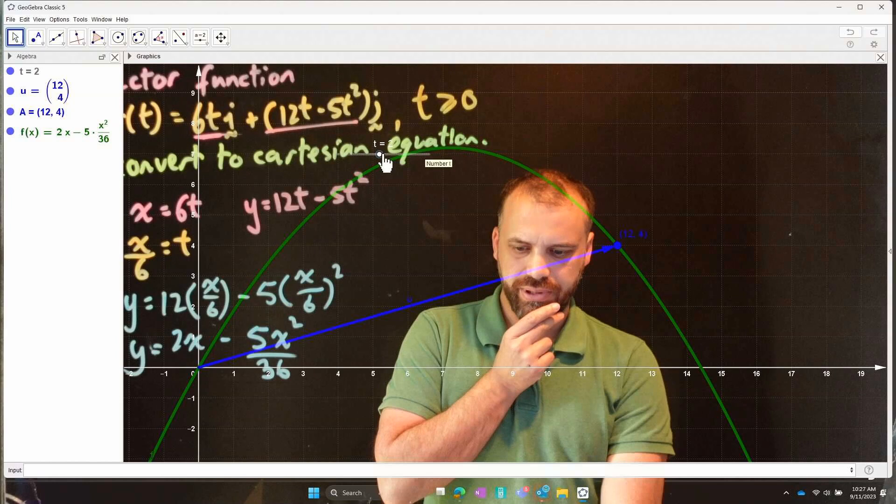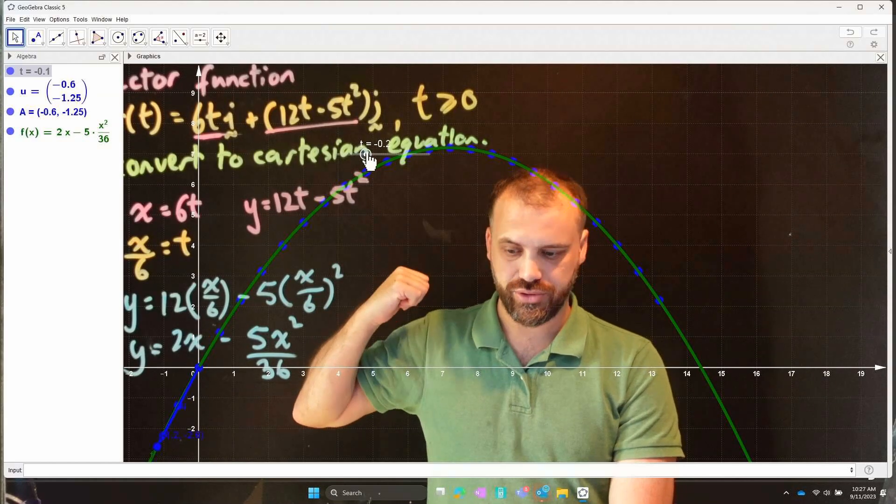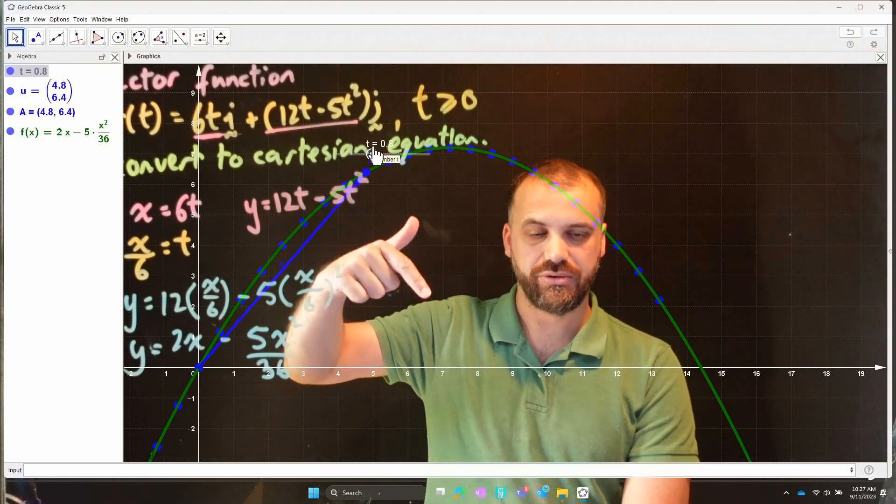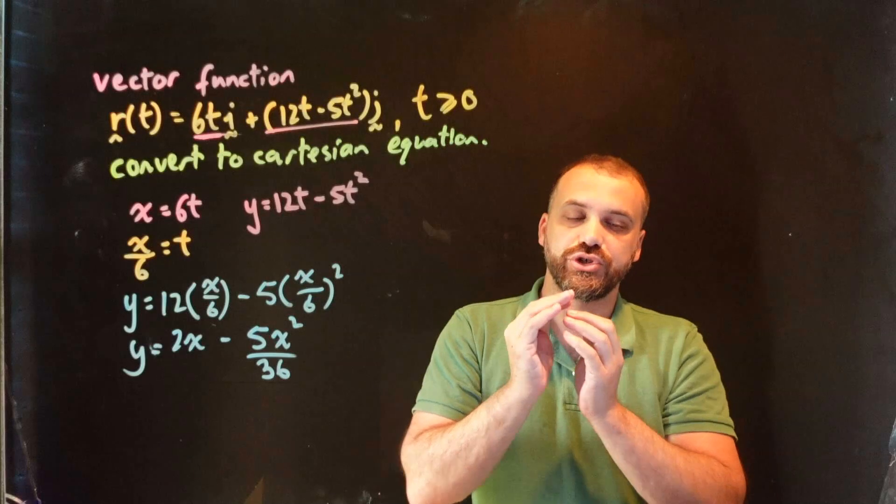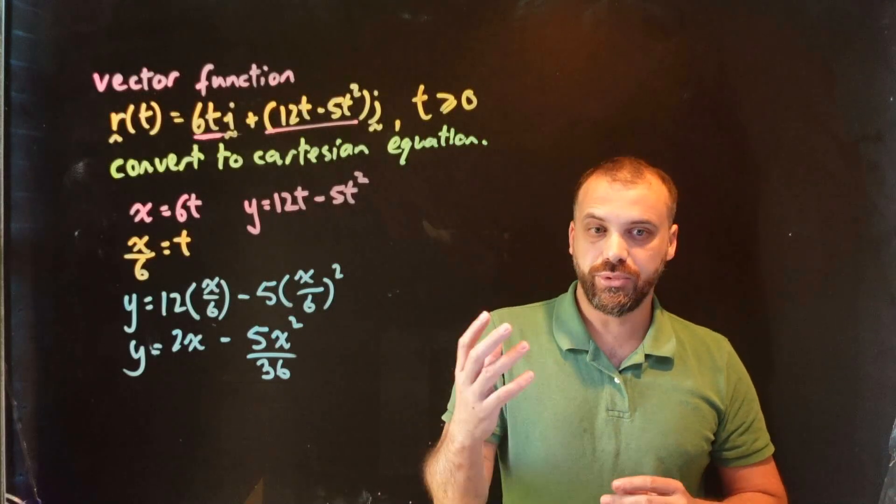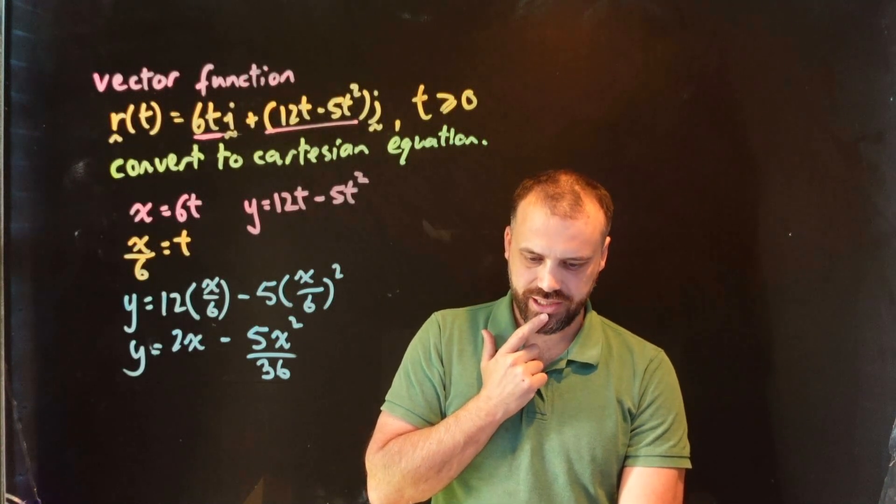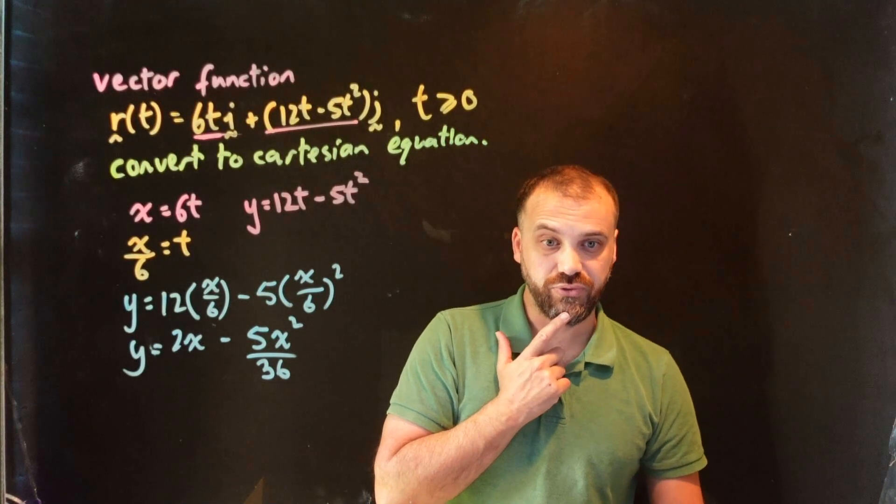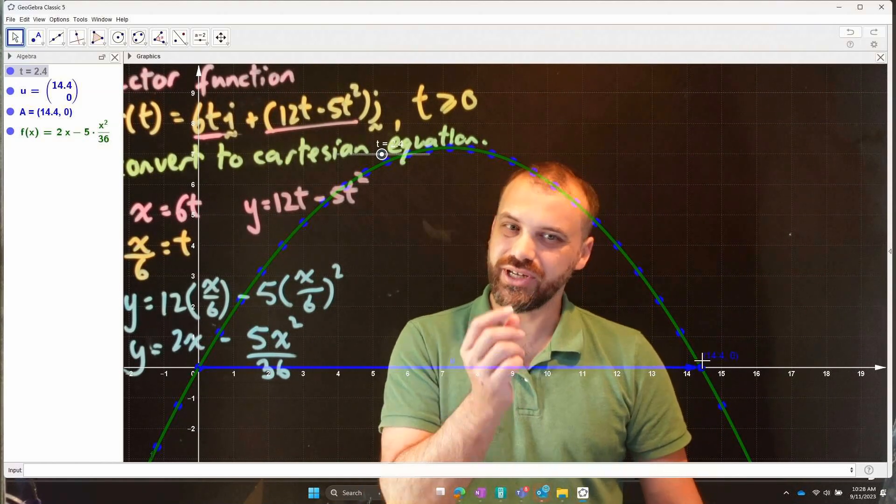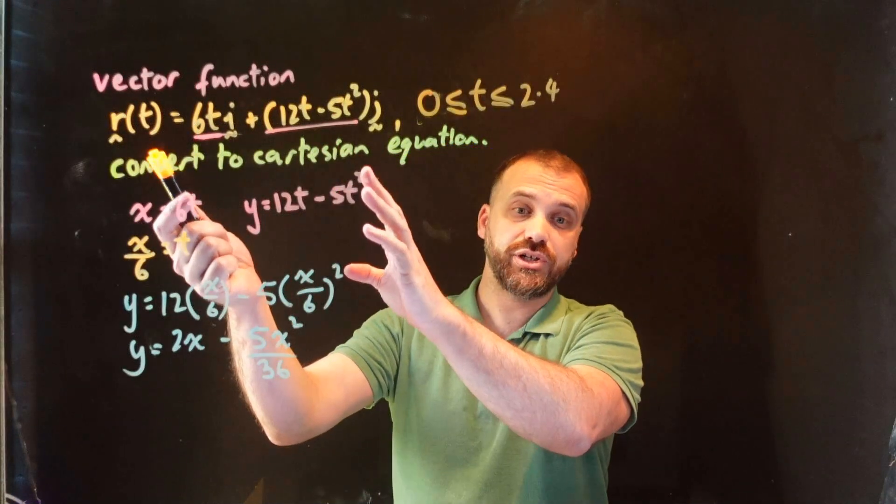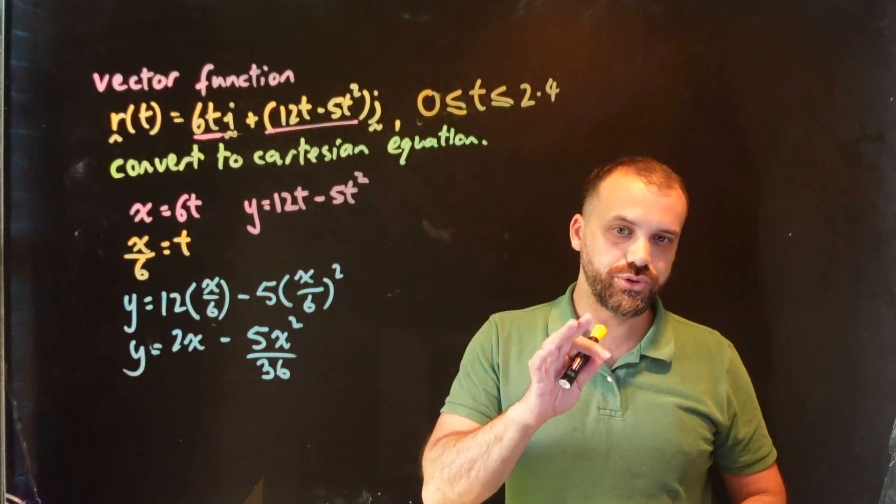Because if we did do that, we'd be able to move backwards in time to a time when the ball was like way underneath the earth somewhere. So, it doesn't make sense for the t to be less than 0. Sometimes it does, but when you write a vector function, you can put a restriction on that t value. You might even say that t can only be greater than 0, but it also needs to be less than, I think it's 2.4. Because at time 2.4, the thing hits the earth. So, let's put another little restriction on here. We can say this vector function models the motion of this ball between time 0 and time 2.4.